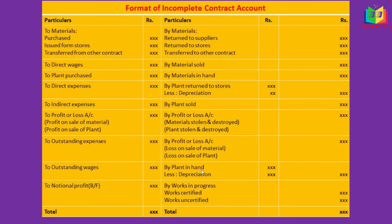Plant in hand is nothing but plant at the end — for that, depreciation has to be calculated. At last, work in progress. This work in progress consists of work certified and work uncertified. Once we complete all this, we have to find the notional profit, which is the last step of this incomplete contract account.